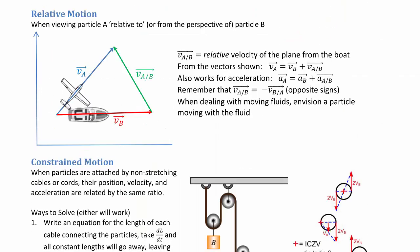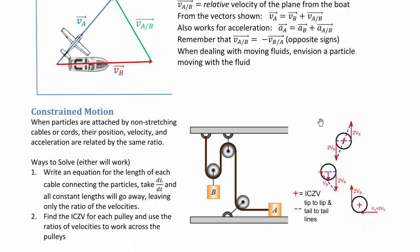The last two sections in Chapter 12 are 12.9 — constrained motion — and 12.10 — relative motion. These are different from but related to the previous topics.